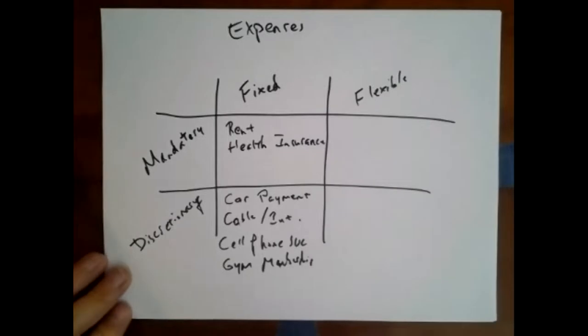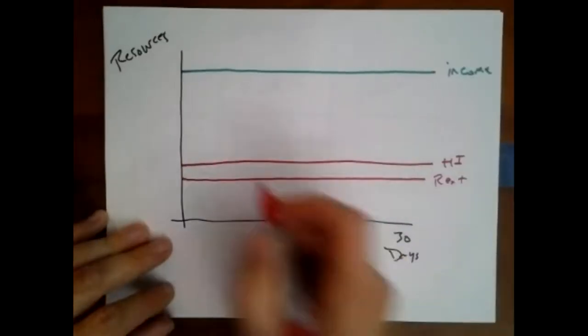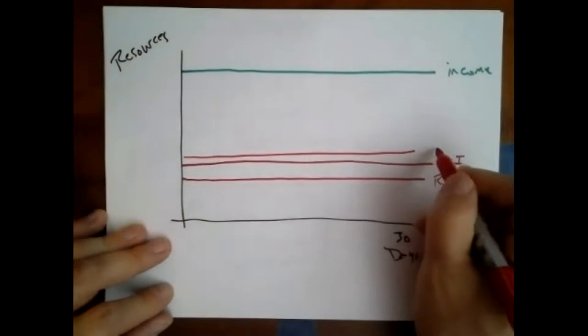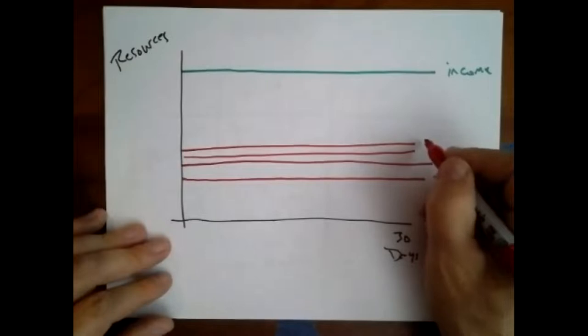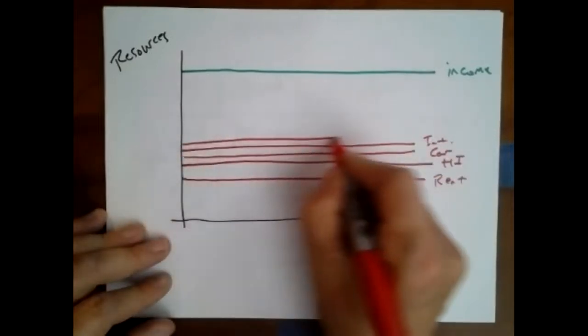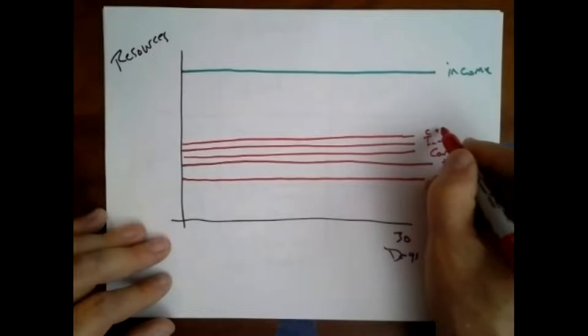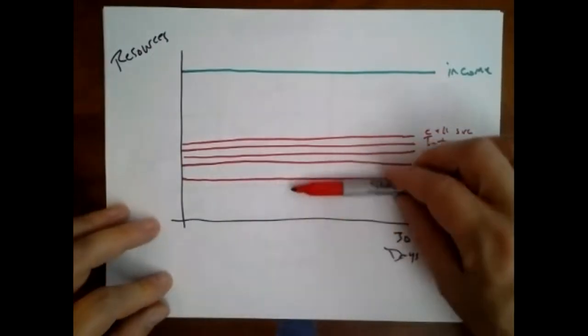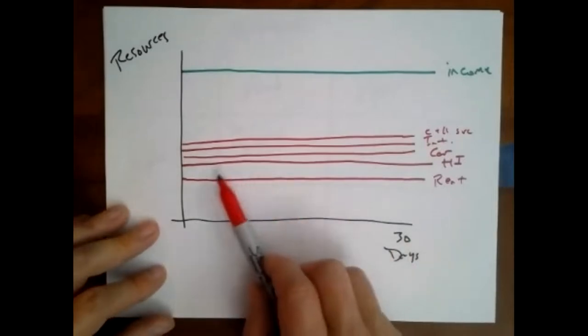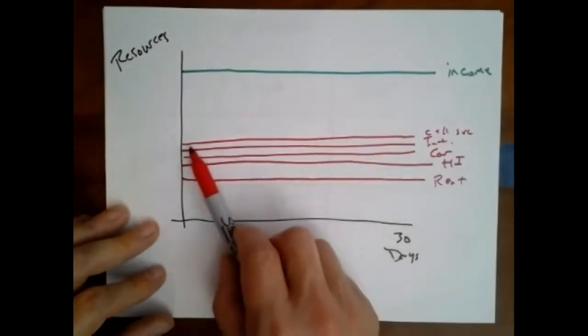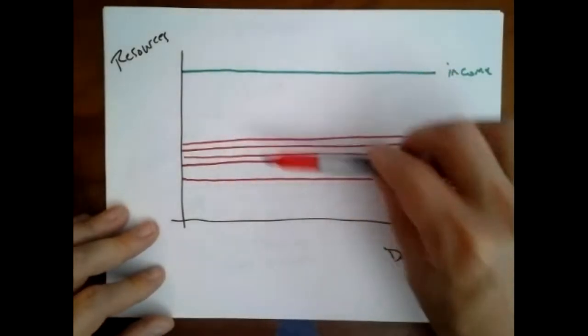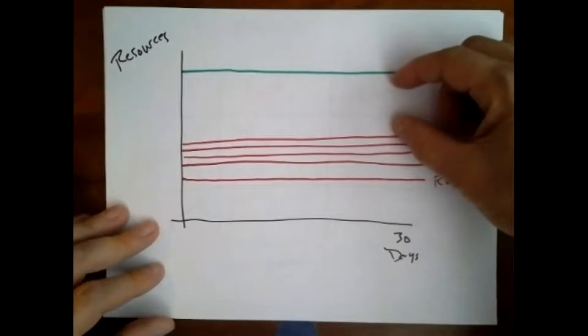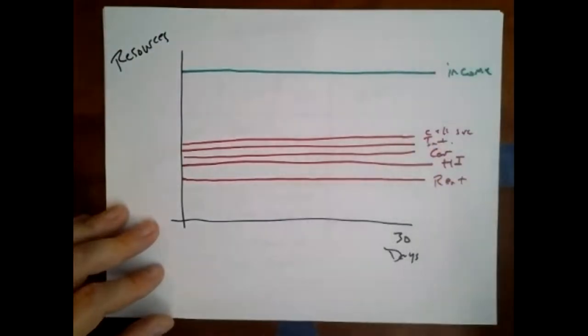So now we're tagging on car payment. Now we're tagging on internet. Now we're tagging on cell service. And what you can see is all these fixed expenses, they don't change over 30 days. They're not going up. They're not going down. It's one price covers the whole month. And so we're ratcheting up, and we're decreasing our room to maneuver our financial freedom. But we're not done. Wait, wait, there's more.